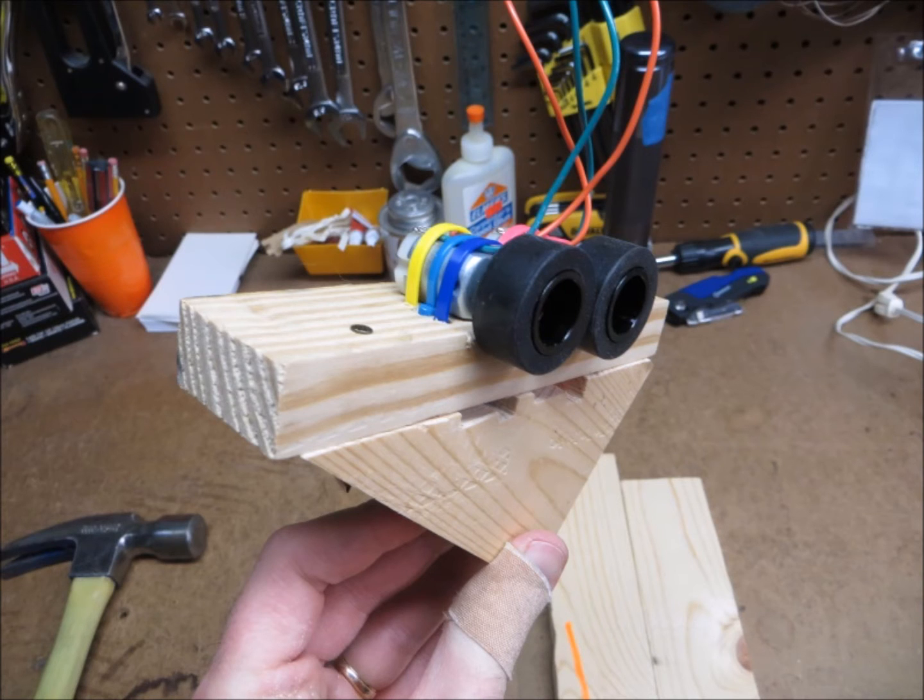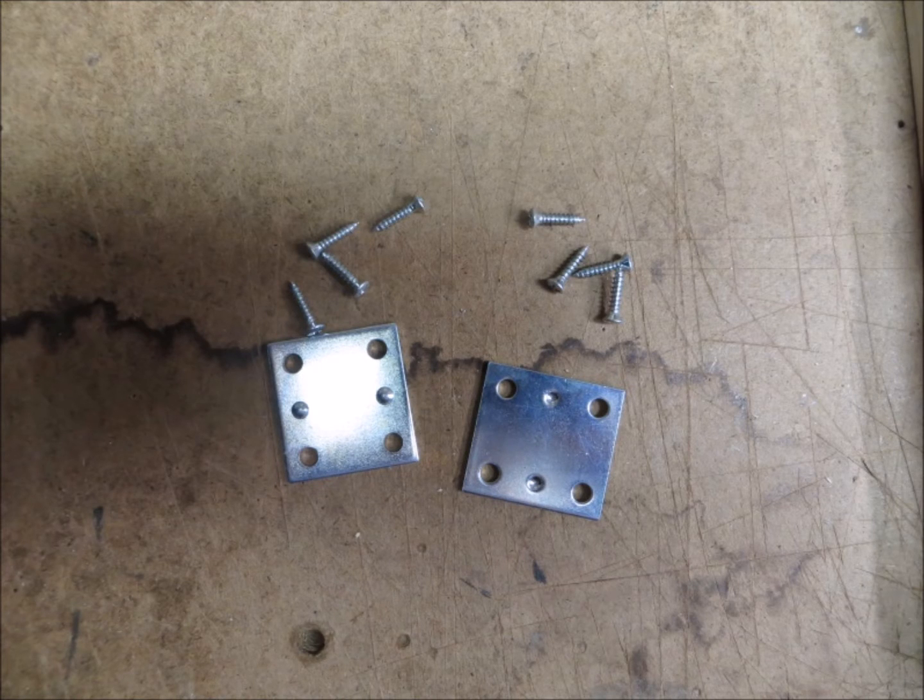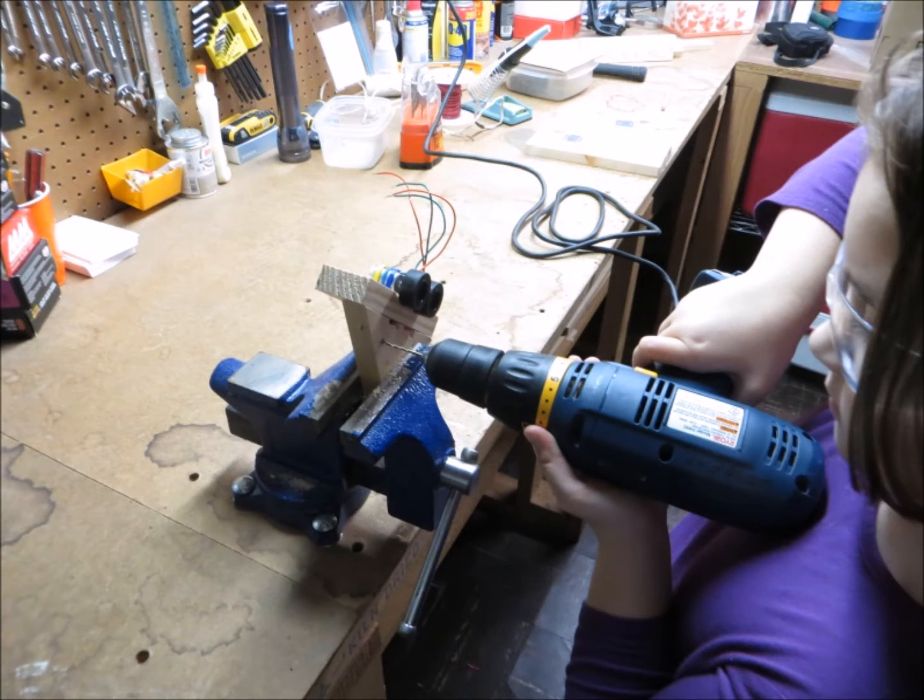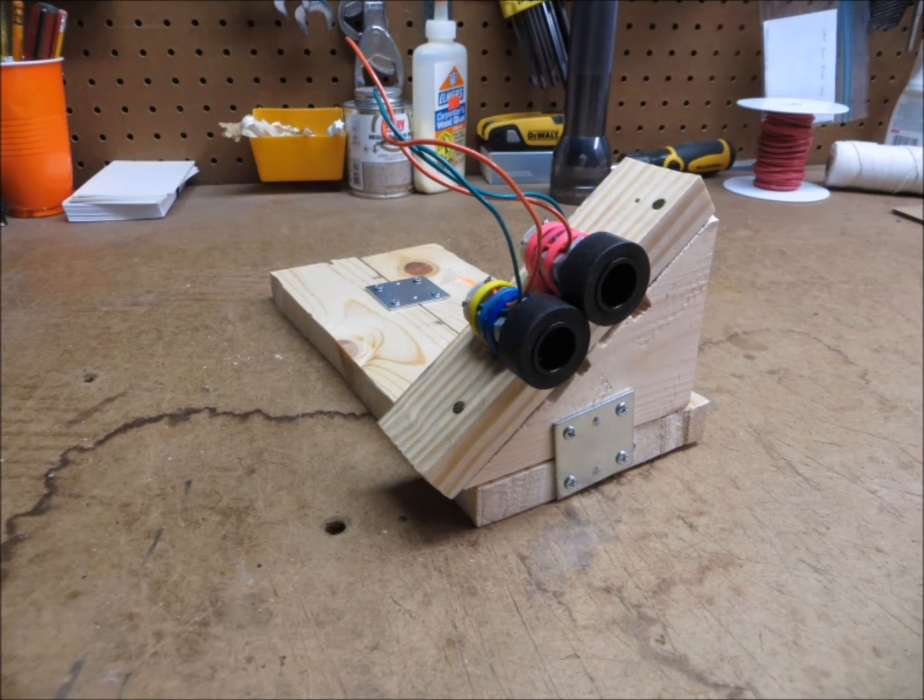To attach the base pieces and the upright pieces together, we settled on flat metal plates. We found where the first plate would attach, traced the screw holes with a pencil, and pre-drilled the holes. Dad clamped the base pieces down so I could screw the first plate on. Then, we found where the second plate would fit and pre-drilled the holes for those screws. With the second plate attached, the frame was nice and sturdy.